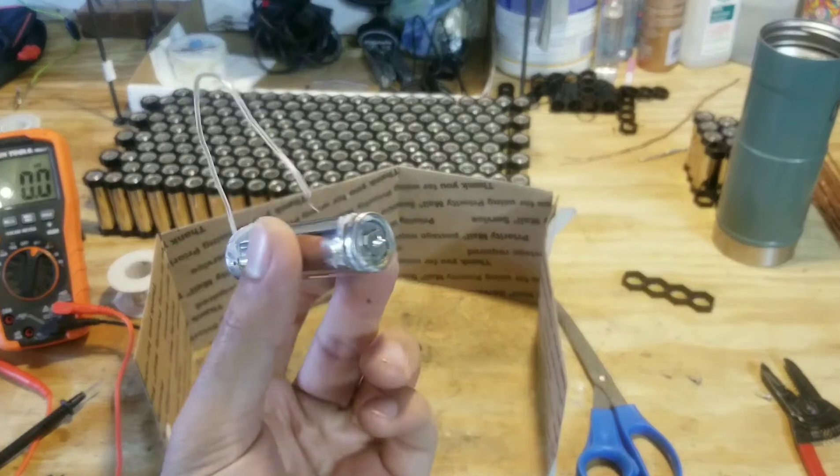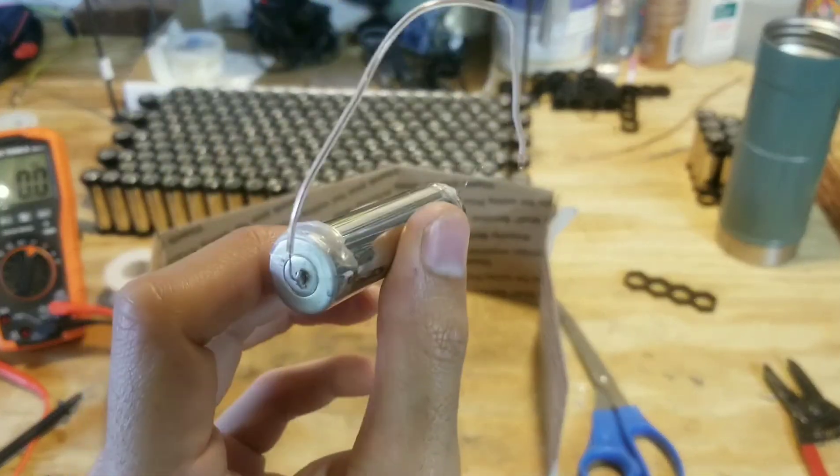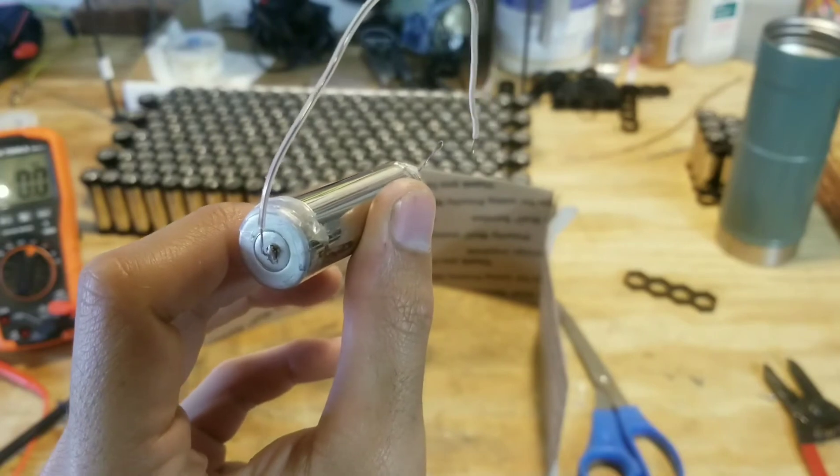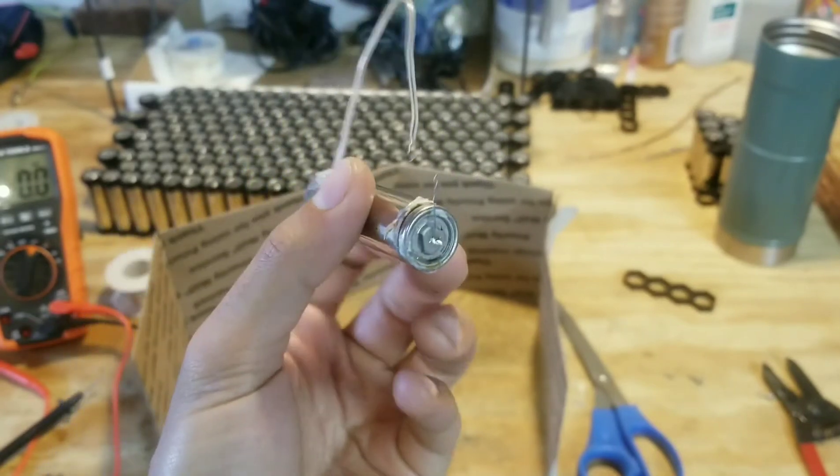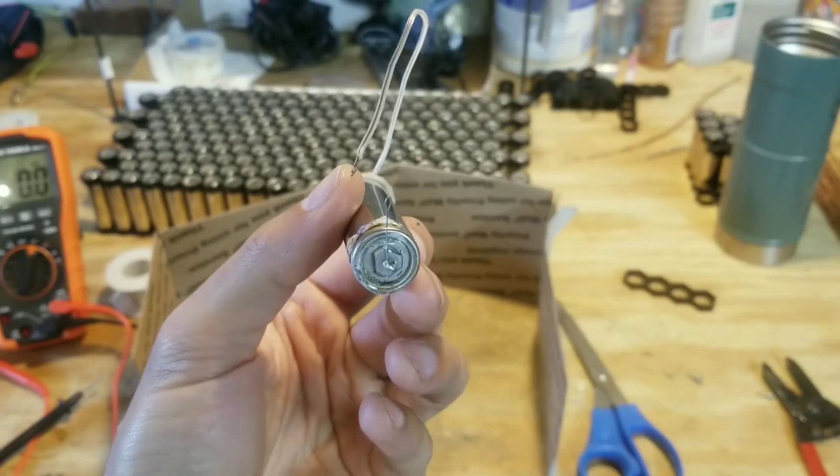I've got it just soldered onto the positive terminal. I've just got a 24 AWG wire soldered onto the negative terminal. I'm gonna hook them together. Hopefully the fuse will blow and the thing won't explode. Let's find out.